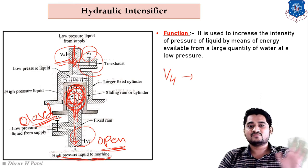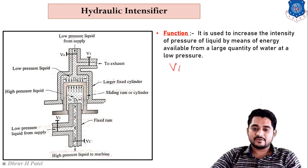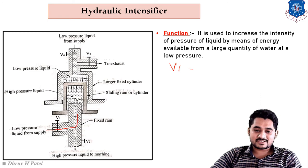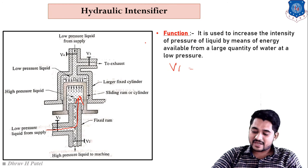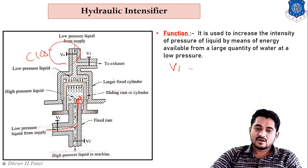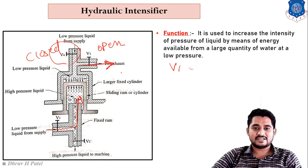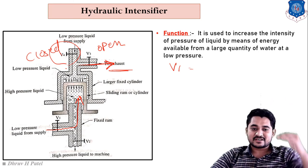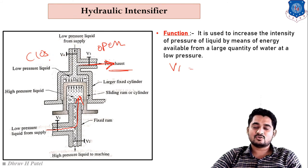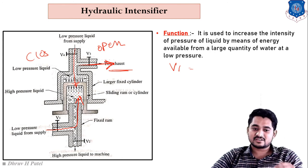The procedure is then repeated. V1 valve is opened again so low-pressure liquid flows in and is stored in the sliding ram section, moving the sliding ram upward. V4 is closed, but V3 (exhaust valve) is opened so exhaust fluid exits. Once the sliding ram reaches its upper position, V4 is opened again.